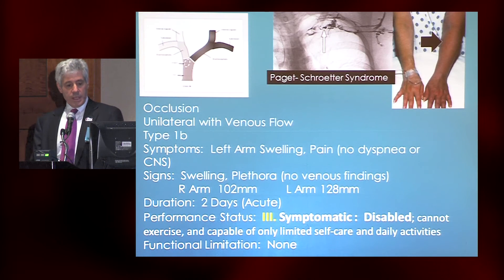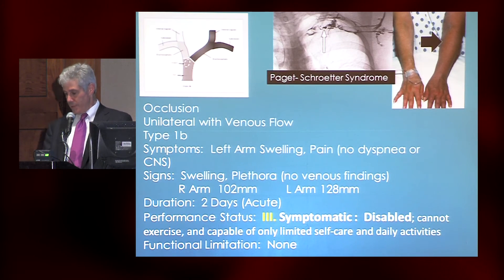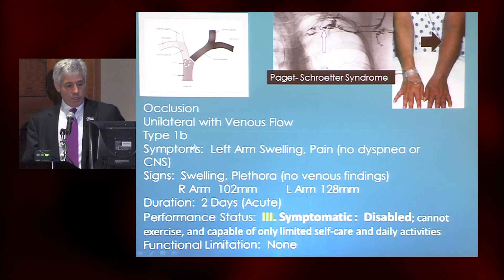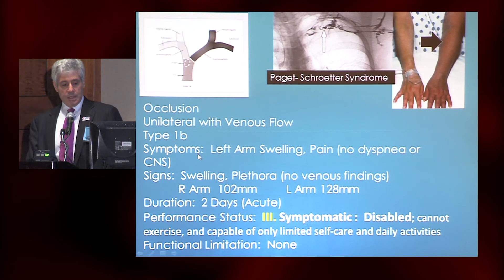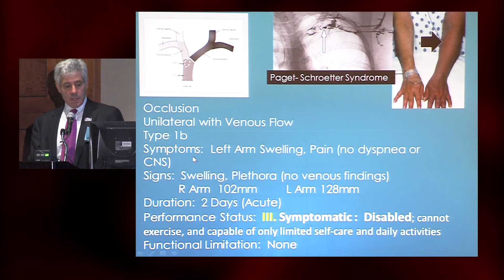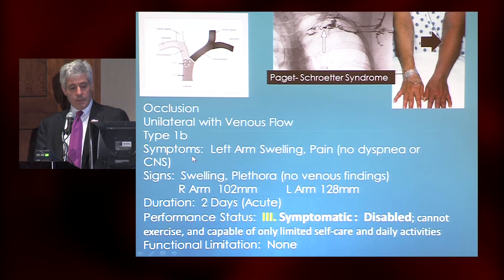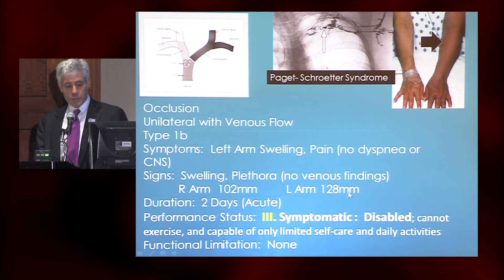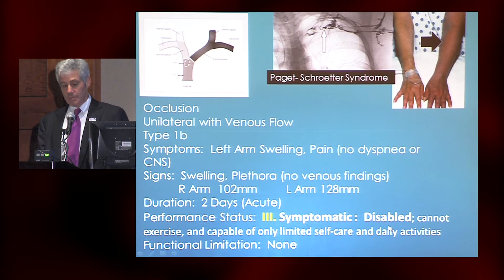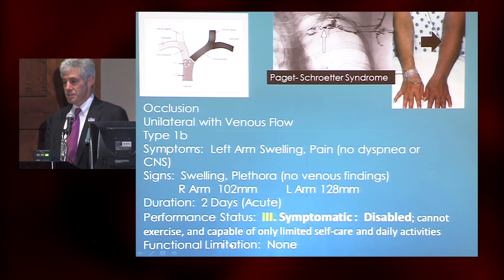Going back to the Paget-Schroeder case: this patient has an occlusion with unilateral venous flow, type 1B. Symptoms are left arm swelling and pain, but no dyspnea or CNS symptoms. Signs include swelling and plethora. Measurements show right arm 102 millimeters, left arm 128 millimeters. Duration is two days, so this is acute. Performance status is disabled. There are no functional limitations — no attempt to recanalize or intervene at this point.